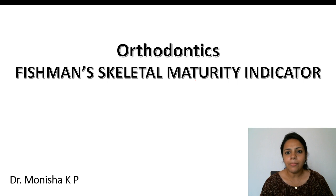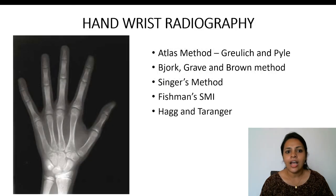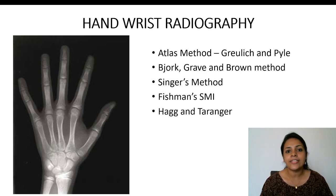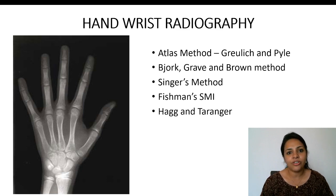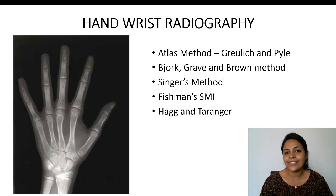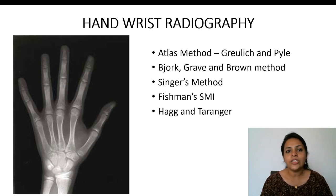The skeletal maturity indicators most commonly used are: hand wrist radiography, the cervical vertebrae, and even tooth mineralization. Clinical and radiographic examination of tooth mineralization has also been used to assess skeletal maturity. Of all these methods, hand wrist radiography is one of the most widely accepted methods.